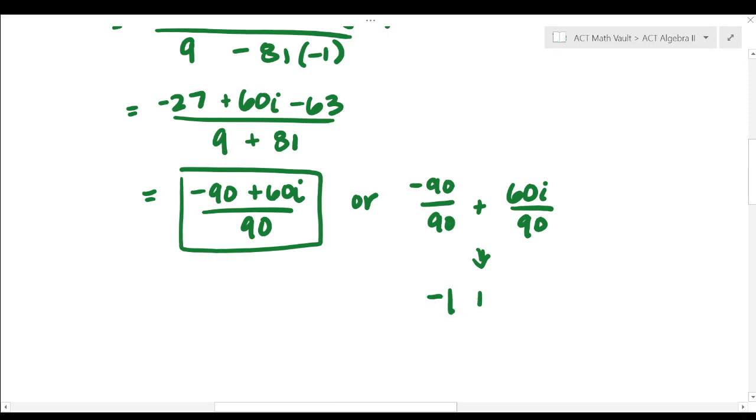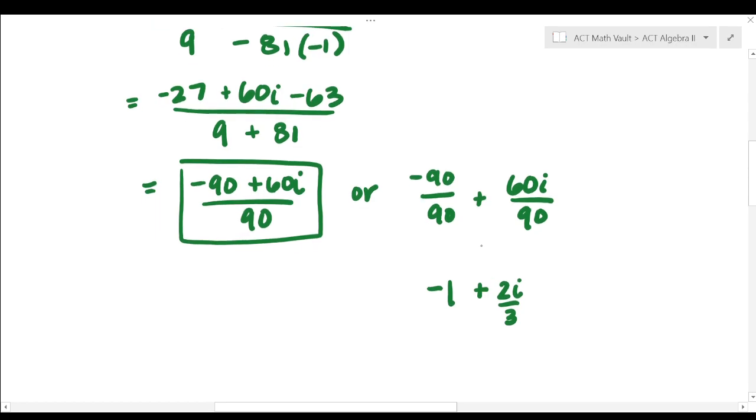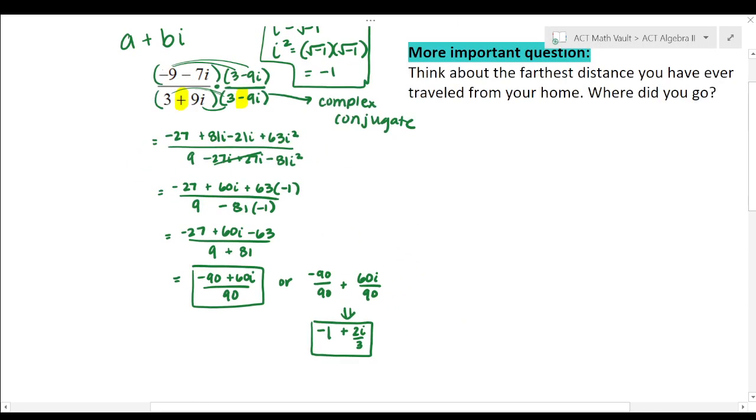And then that simplifies to negative one plus, and then the 60 over 90, that's the same thing as two thirds. So you would do like two i over three or two thirds i. So I would be more comfortable with that second answer, but technically both are correct.